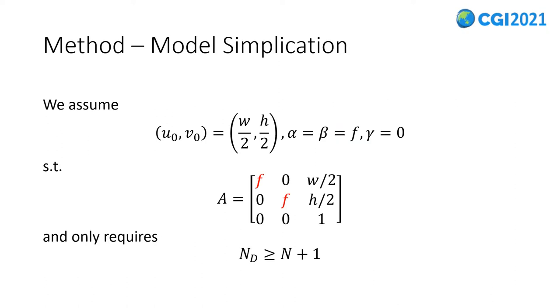For estimating just the focal length, we simplify the camera model with common assumptions. They include central principal point, square pixels, and zero skew. In this case, the focal length is the only intrinsic we estimate, which requires at least four points and five distances between them as a necessary condition for the solution.